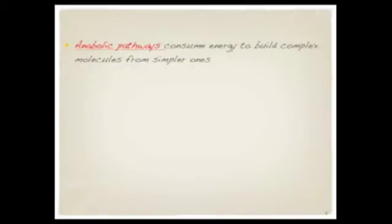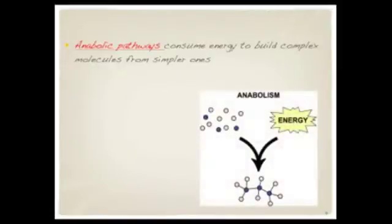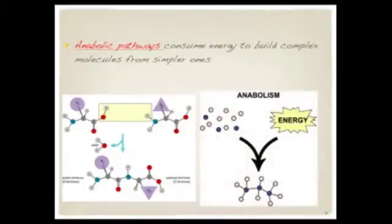On the flip side, there are anabolic pathways, which consume energy to build complex molecules from simpler ones. A real-life example of this is the way that we might take two amino acids and put them together to make a polypeptide chain. We're building something more complex from simpler molecules.